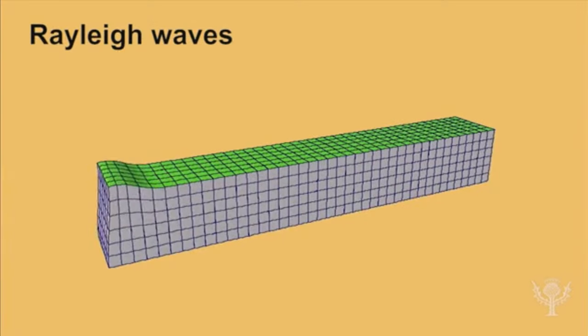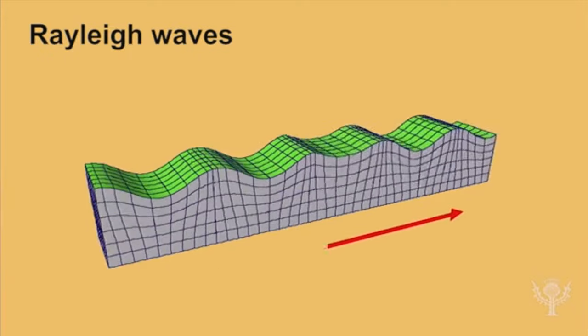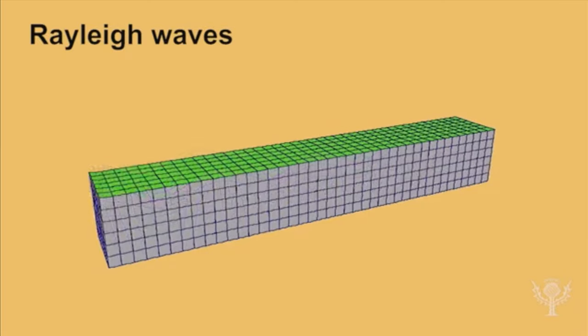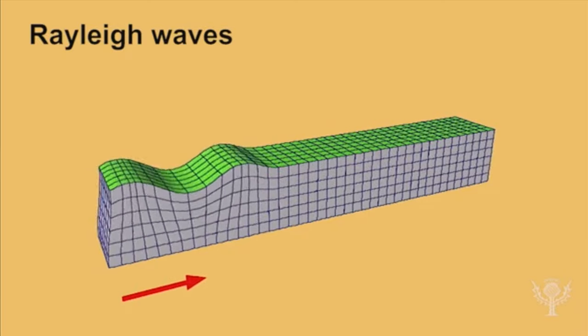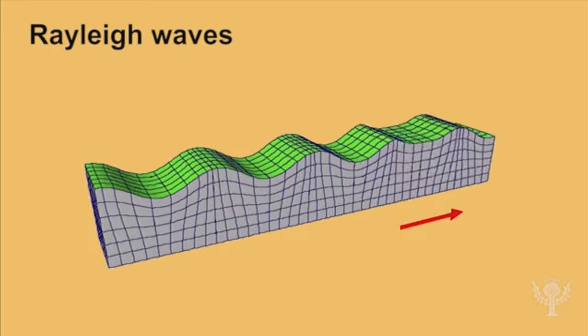Rayleigh waves cause the ground to shake in an elliptical pattern. This motion is similar to that observed in ocean waves. Of all the seismic waves, Rayleigh waves spread out the most, giving them a long duration on seismograph recordings.